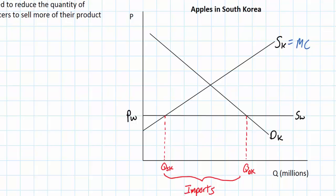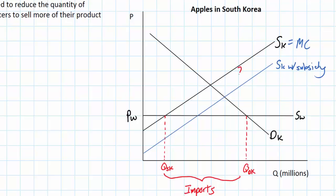A subsidy reduces the marginal cost to apple growers in South Korea and therefore shifts the marginal cost curve down, or shifts the supply curve to the right. I'll label this new curve SK with the subsidy. The amount of the subsidy per apple can be understood as the vertical distance between the two supply curves. Since the vertical axis represents price in dollars or South Korean won, the per unit subsidy lowers the cost of apples by that vertical distance, shifts the supply curve outward, and leads to an increase in domestic supply.